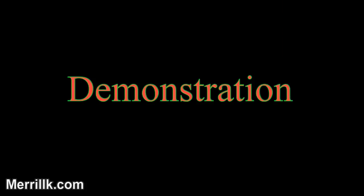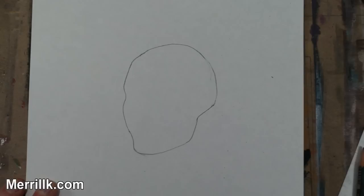Now it's time for the demonstration. Since we studied a male head in the first part of the video, let's switch it up and draw a female head. Just follow the directions for each step and also on the shading tutorial. Step 1: Draw the shape that you see. Notice that it's an egg shape with various protrusions and indentations. This is the most difficult step, so take some extra time.